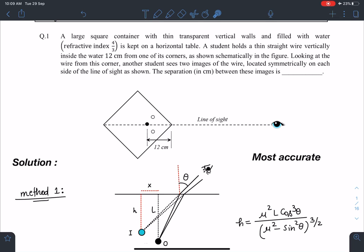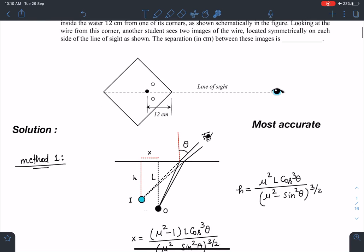So method one, what happens when observer is not at the near normal situations, and it is at some angle? So this is the theta from the normal of the surface. So suppose observer is along this line. So what exactly is going to see about this object?